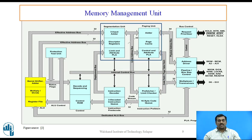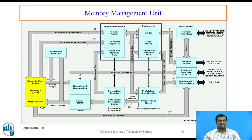The next unit is the memory management unit, which consists of a segmentation unit and a paging unit. The segmentation unit allows segments of size 4 GB at maximum and provides a mechanism for isolating individual code, data, and stack modules so that multiple programs or tasks can run on the same processor without interfering with each other. When operating in protected mode, some form of segmentation must be used. Segmentation gives a mechanism for dividing the processor's linear address space into smaller protected address spaces called segments.